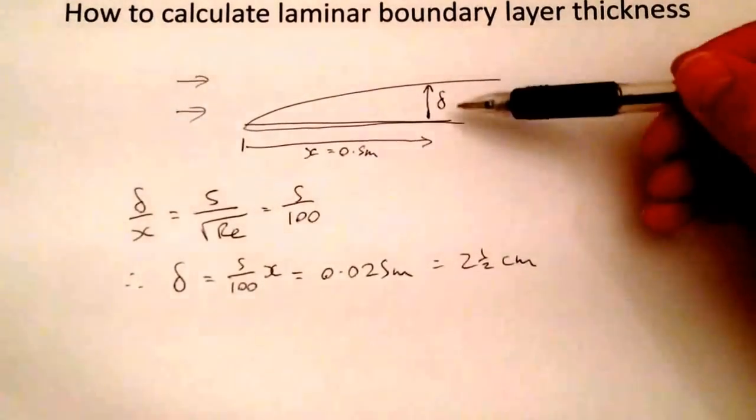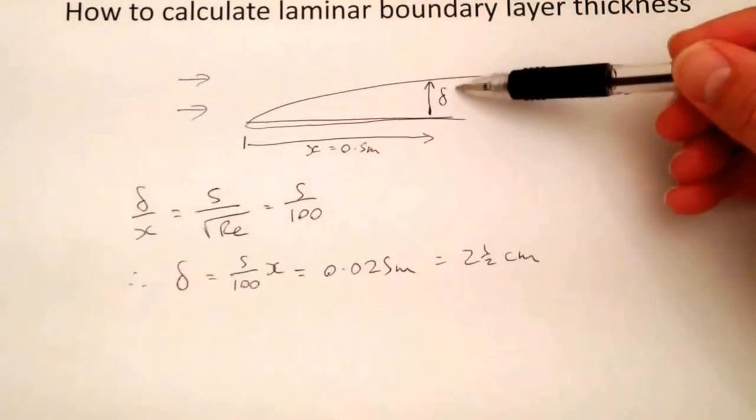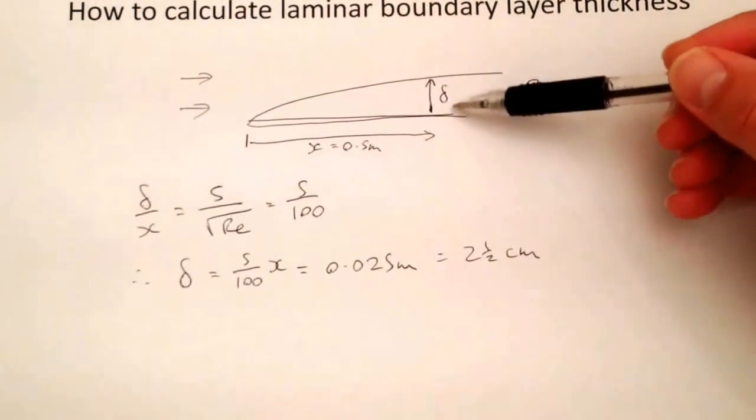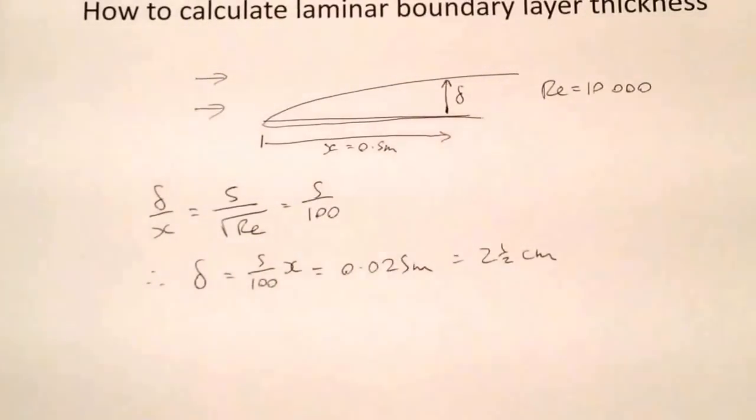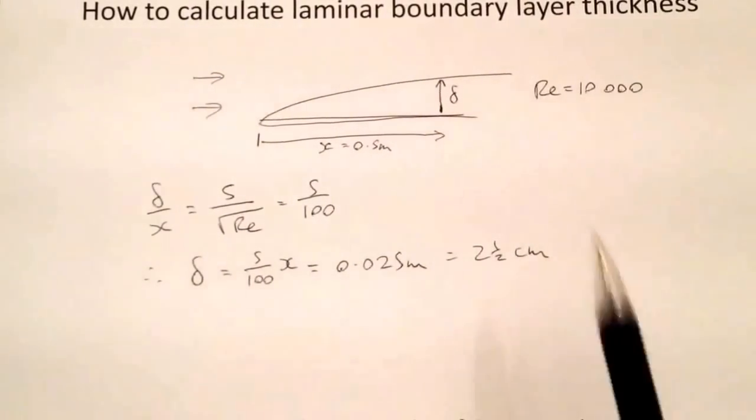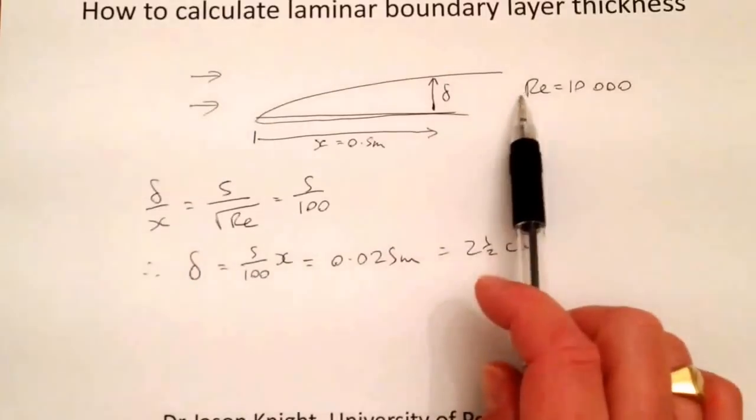So this thickness of this laminar boundary layer will be two and a half centimeters, a half a meter along the plate. The further down the plate you go, the boundary layer thickness will grow.